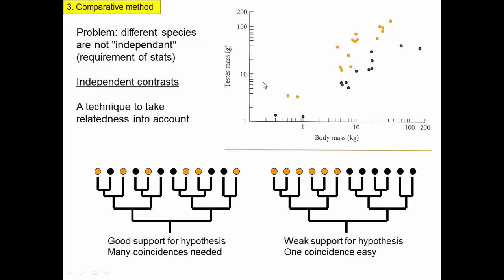There is a problem we have to keep in mind when doing studies like this: different species are not independent from each other. One of the major requirements of statistics is that all data points are independent. That is not true in evolutionary biology, because two closely related species may have similar body size and testes size simply because they share a common ancestor. Those two data points are not really independent — they're representatives of two descendants of an ancestor. So we have to use techniques like independent contrasts.